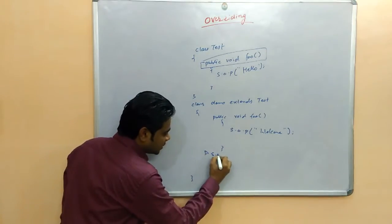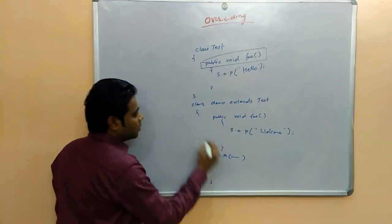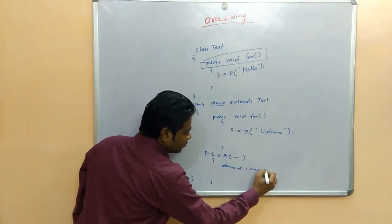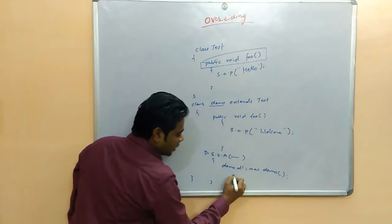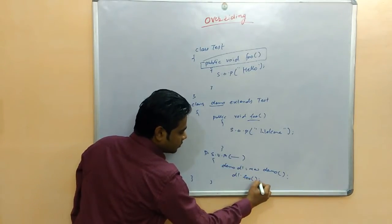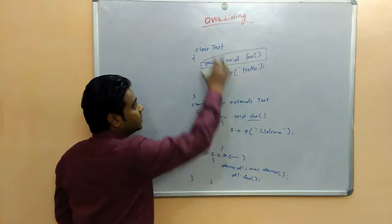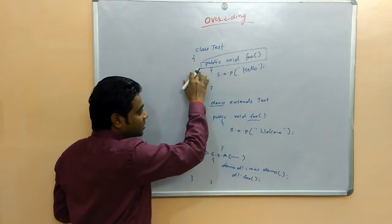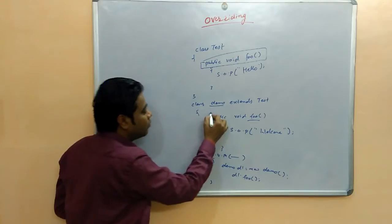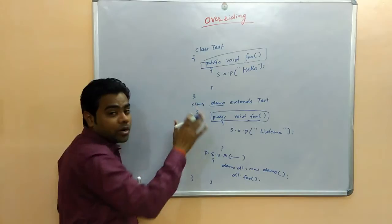Then public static void main is declared here. An object b1 equal to new demo is created. This method overriding means that when the child class overrides the base class method, they use the same method.